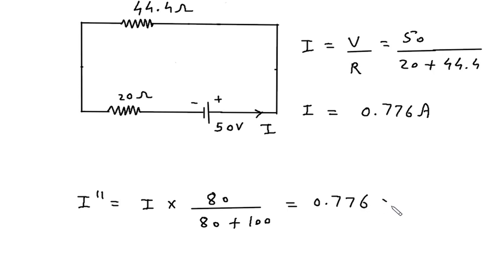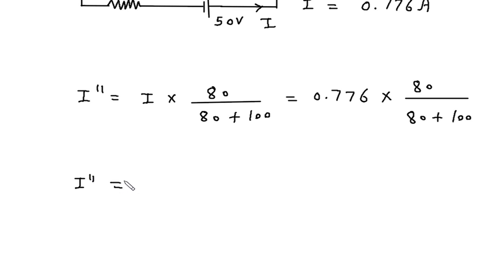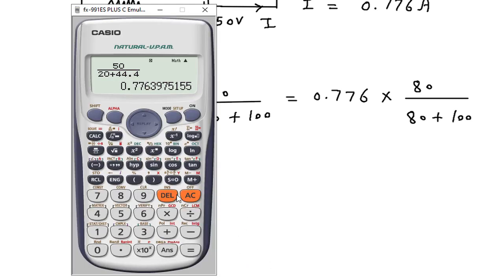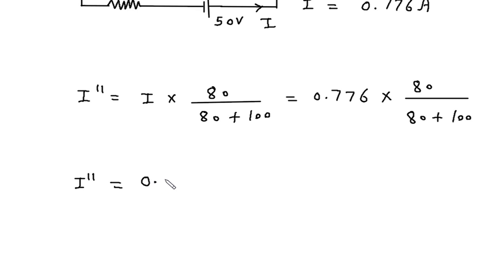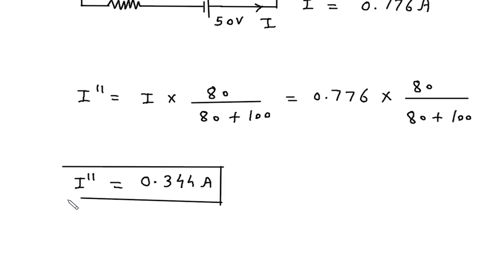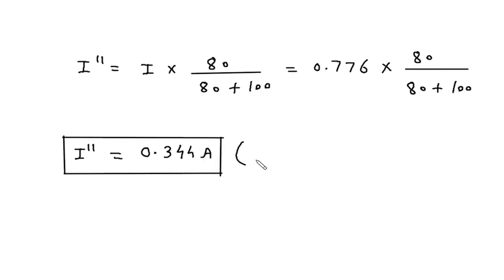Substituting, I double prime is equal to 0.776 into 80 divided by 80 plus 100, which equals 0.344 ampere. The direction of I double prime is leftward.